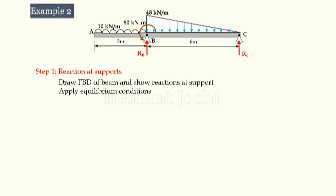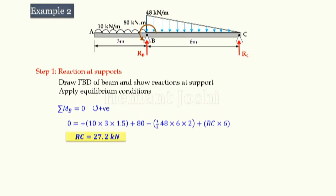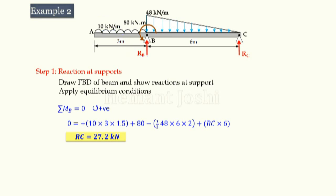We will take moment at point B so that reaction at C can be found immediately. Writing that equation — moment at B: there is a UDL, so rectangular load. UDL intensity is 10, distance is 3, so total UDL is 10 × 3 = 30 kN, acting at the midpoint. Taking moment about B, the horizontal distance required is 1.5. This moment is anticlockwise, so sign is taken positive.